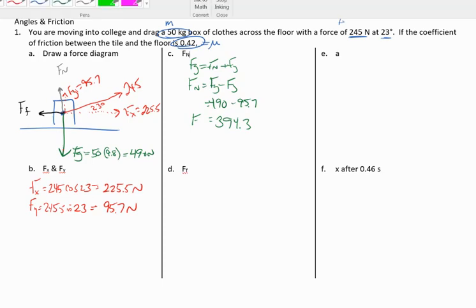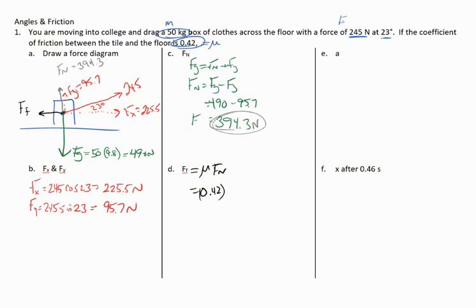Next step, once I know what that normal force value is, 394.3, I can use that to find the force of friction. The force of friction is equal to the coefficient of friction mu times the normal force. We're given the coefficient of friction, 0.42, and we calculated the normal force, 394.3 newtons, to give us a total force of friction of 165.6 newtons.